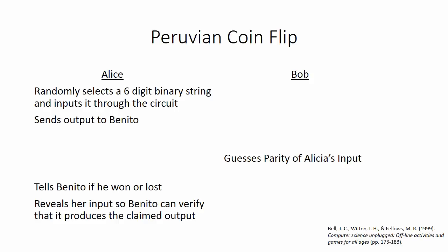Just like with the Blum protocol, we have two people, Alice and Bob, who want to flip a coin over the phone. Because Alice and Bob are married and they argue a lot, they have already selected a circuit to use, which is the first step in actually executing the Peruvian coin flip. So after having selected their circuit,